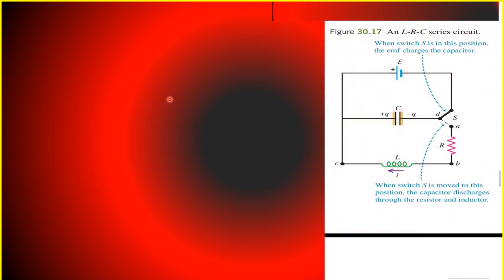In our past episode where we discussed LC or inductor-capacitance circuit, we assumed that there was no resistance in the circuit. Such assumption is very ideal because in reality, every real inductor has resistance in its windings. And there may also be resistance in the connecting wires. So because of the resistance, the electromagnetic energy in the circuit is dissipated and converted to other forms such as internal energy of the circuit materials.